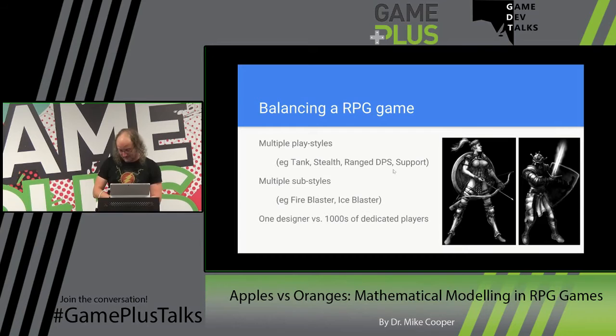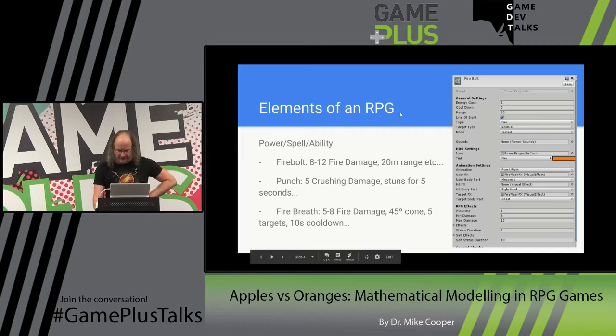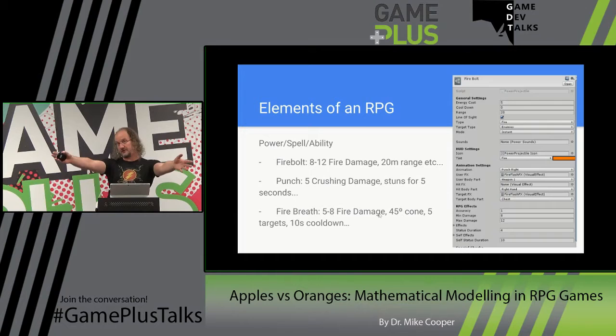The elements of an RPG: you've got a power, a spell, an ability a character can do. Here's a shot of the Unity inspector for my system, where I've got a fire bolt power that does 8 to 12 damage, 20 metres range. You might compare that with a punch which does 5 crushing damage — a different damage type — and also stuns the target for 5 seconds. Or compare it against fire breath, which does less damage within a cone but can hit multiple targets.